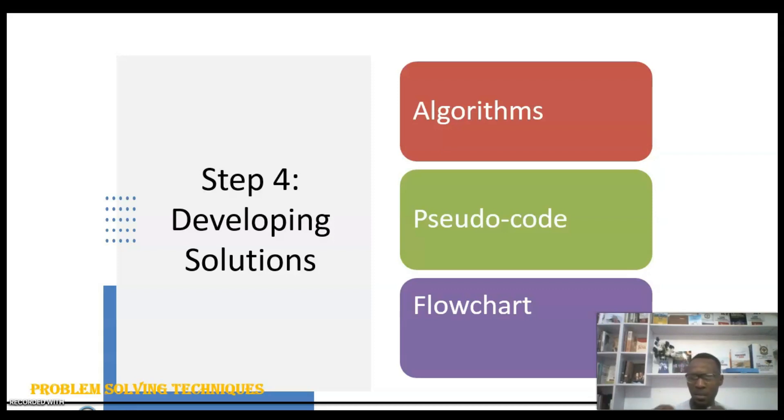Forms like pseudo-code, forms like flowchart. English-like statements of the procedures to solve your problem is what pseudo-code is all about, while a diagrammatic or graphical representation of the procedure is what flowchart is all about. Basically, both of them are ways we can use to represent our step-by-step procedure to solve our problem.